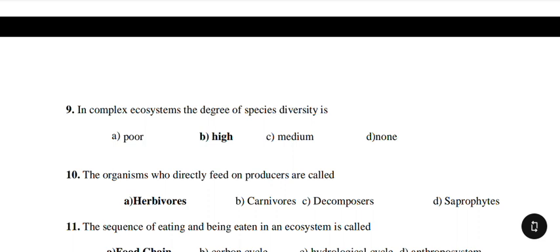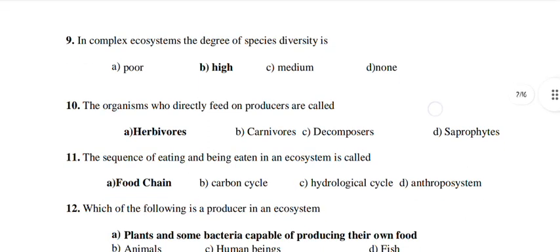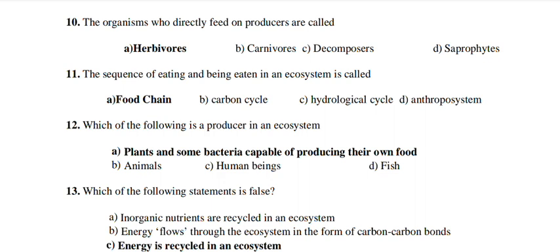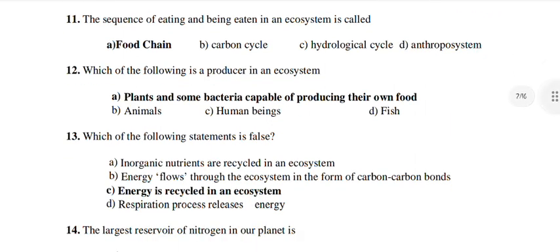The organisms who directly feed on producers are called herbivores. The sequence of eating and being eaten in the ecosystem is called a food chain. Which of the following is a producer in the ecosystem? Plants and some bacteria capable of producing their own food. Which of the following statement is false? 'Energy is cycled in an ecosystem' — that is false.